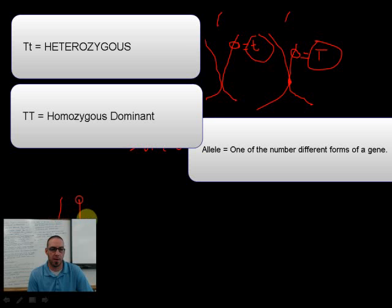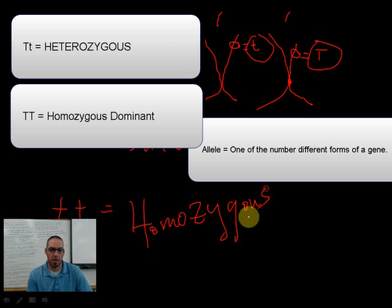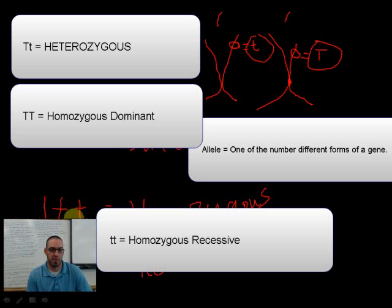And then the last one, the last possible genotype with what we have here, is what is called homozygous recessive. It's homo because homo means the same, zygous because it means gene, recessive. So it's homozygous recessive because it has both lowercase t's, and it is carrying both recessive genes.